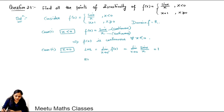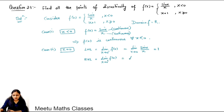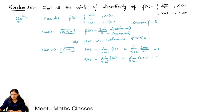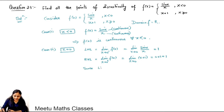Now we calculate the right hand limit, that is the limiting value of the function as x tends to 0 plus. To the right of 0 the function is defined as x plus 1, so by direct substitution the right hand limit is also 1. Since left hand limit equals right hand limit, the limiting value of the function as x tends to 0 is equal to 1.